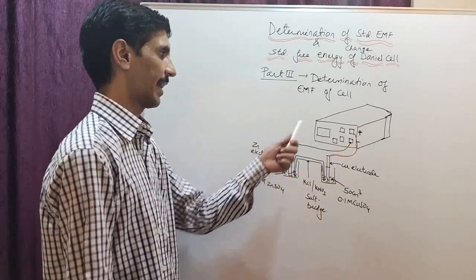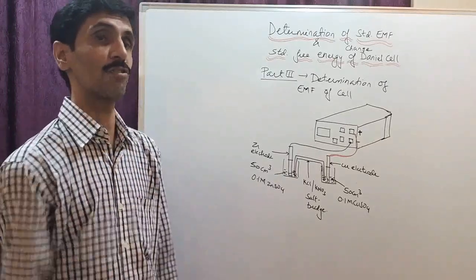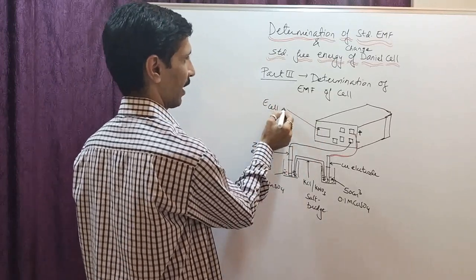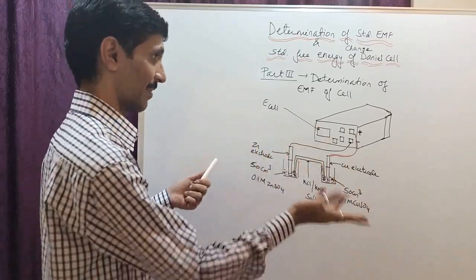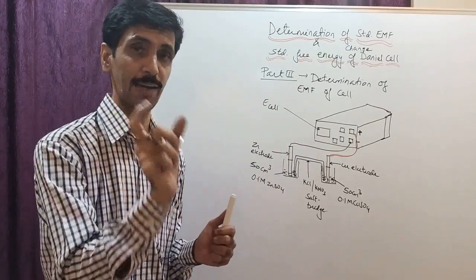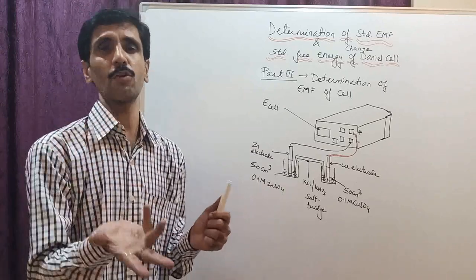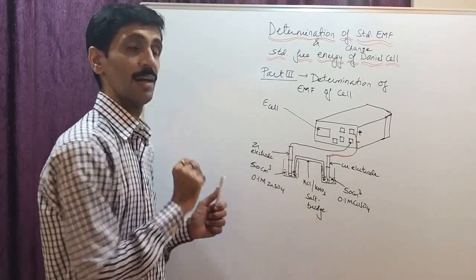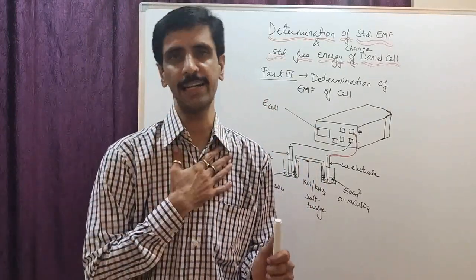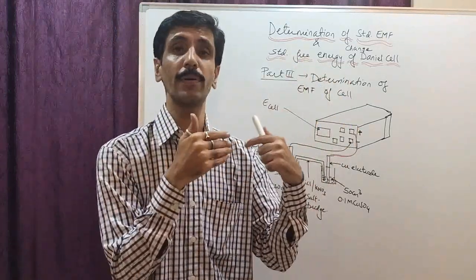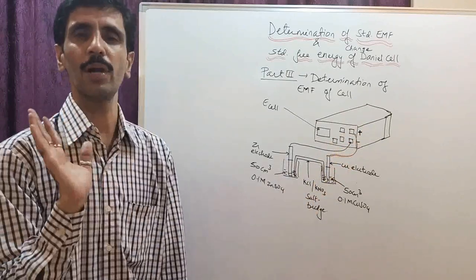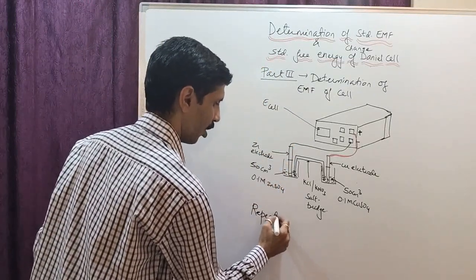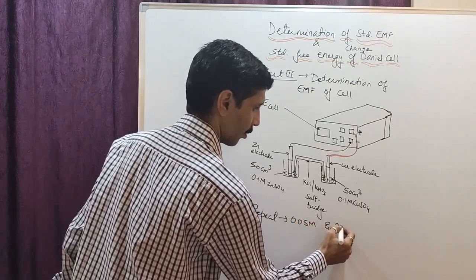Once all connections are made and the salt bridge is in place, you will see a value on the display — this is the EMF of the cell, or E_cell. Note it down. This is for 0.1 molar solutions. Then slowly lift the salt bridge, put it in a beaker of distilled water, wash the two electrodes well with water, throw off the solutions, wash the beakers well, and repeat the same procedure for 0.05 molar solutions on both sides.